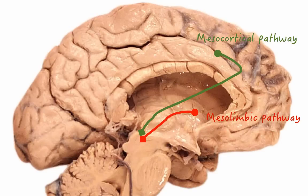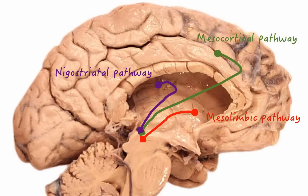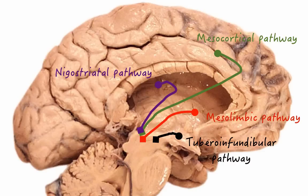The third one is the nigrostriatal pathway, which controls motor movements and projects from the brainstem and substantia nigra, with axons terminating at the basal ganglia. The last one is the tuberoinfundibular pathway, where neurons project from the hypothalamus to the anterior pituitary gland.